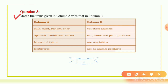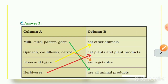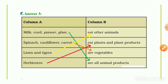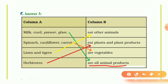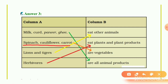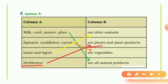Question 3: Match the items given in Column A with Column B. Answer: Milk, Curd, Paneer, and Ghee — are all animal products. Spinach, Cauliflower, Carrot — these are vegetables. Lion and Tiger — eat other animals. Herbivores — eat plants and plant products.